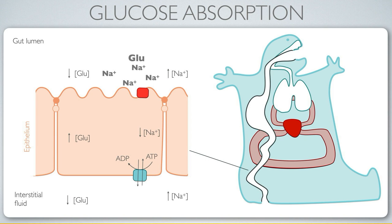It does this because it is simultaneously allowing the sodium to move down its chemical concentration gradient. So even though this co-transporter is not hydrolyzing ATP directly, it's taking advantage of the concentration difference in sodium that is created by sodium-potassium ATPase.